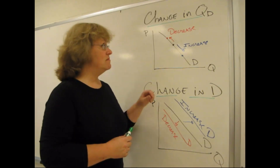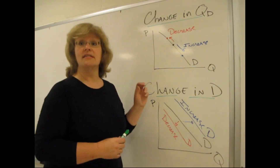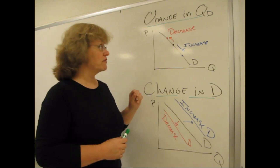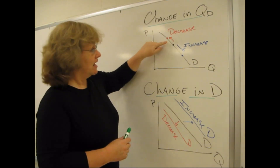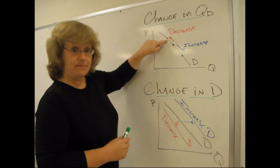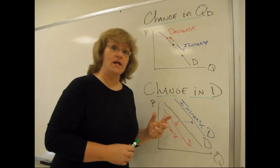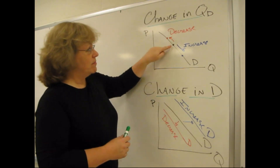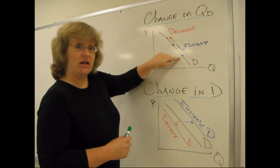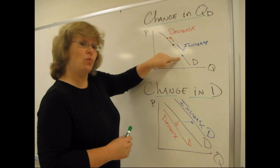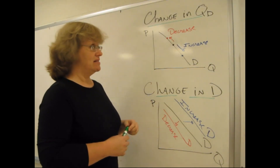A change in quantity demanded is a movement along a single demand curve. As you move from the black dot in the middle up to the red dot, that's called a decrease in quantity demanded. As you move from the black dot down along the demand curve to the blue one, that's called an increase in quantity demanded.